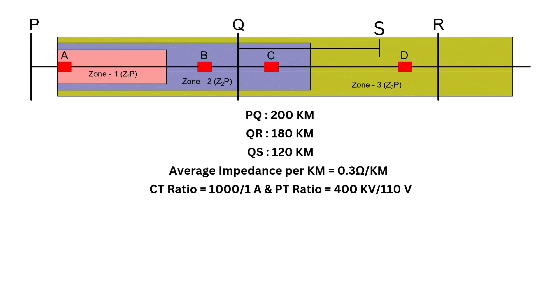Let's see how we calculate the impedance settings for each zone. First, we calculate the total line impedance for PQ, 200 × 0.3 = 60 ohms. Since zone 1 covers 80% of the line length, the impedance setting will be 0.8 × 60, which is 48 ohms.